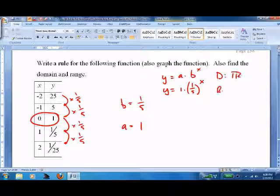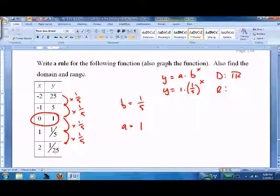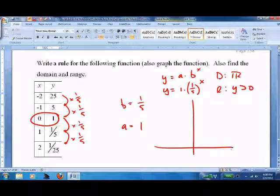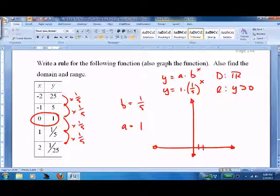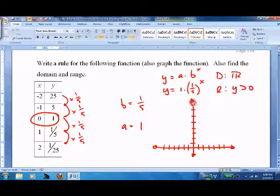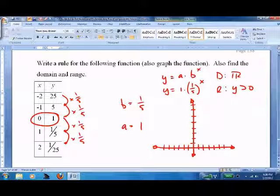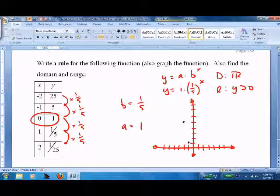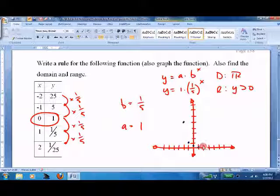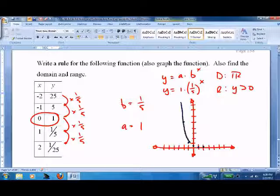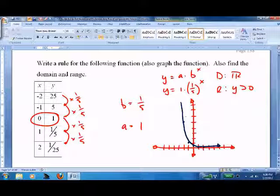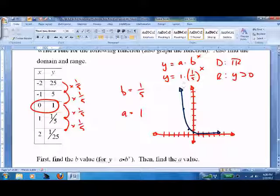Domain is all reals. Range: y keeps getting smaller but never zero, so y is greater than zero. Quick graph: negative two gives 25, we'll go by fives up to 25. Negative one is five, zero is one, and then these are barely above the x axis. Same looking graph - exponential decay starts out great then gets smaller and smaller very rapidly until we can't even tell the difference.